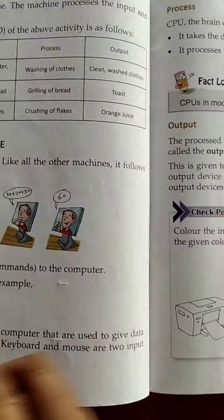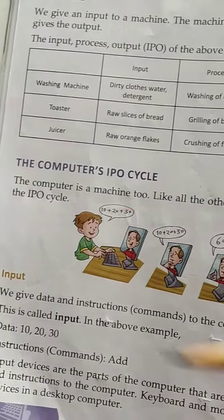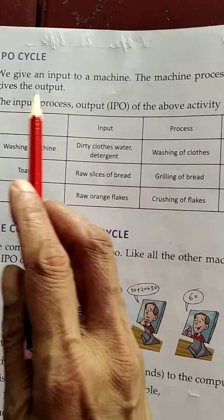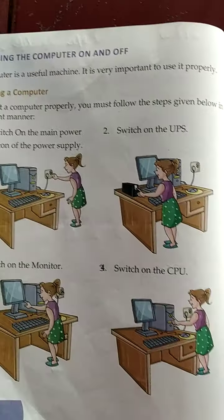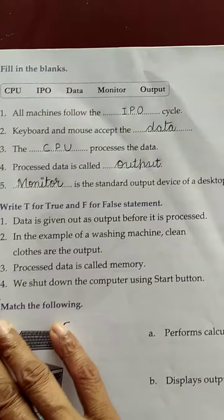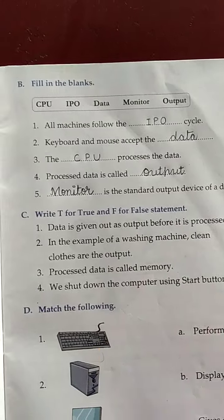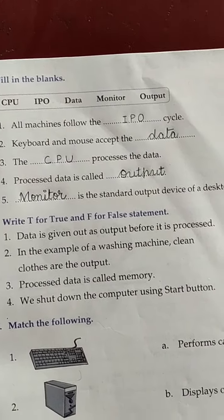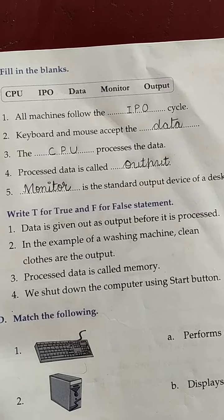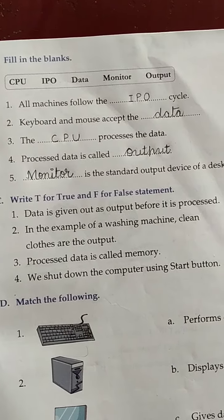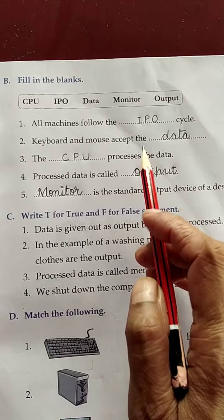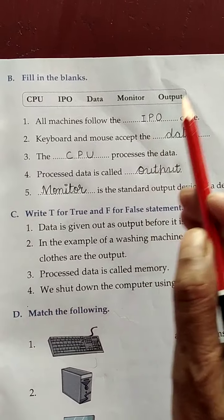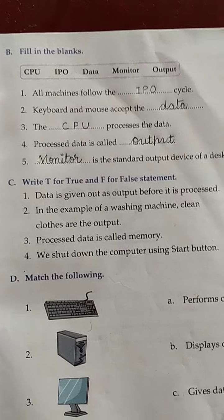Number 3: Which of these is a storage device? We store movies, documents in CD, DVD, and pen drive. So pen drive is a storage device. CPU is the processing device and keyboard is the input device.